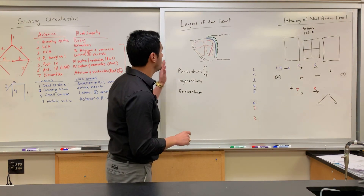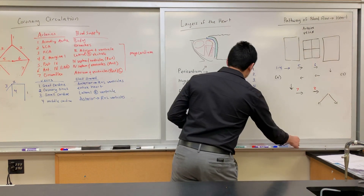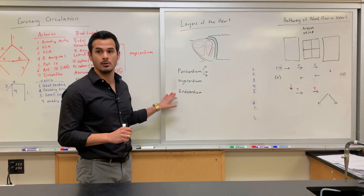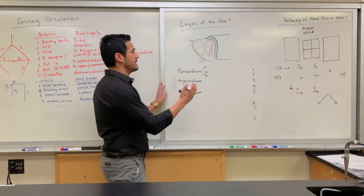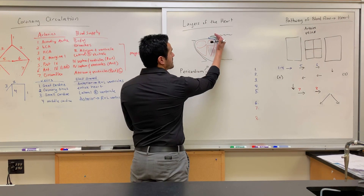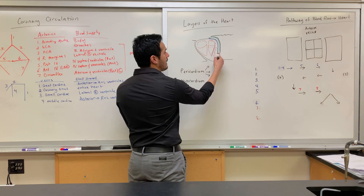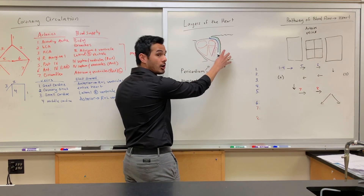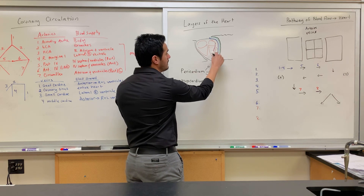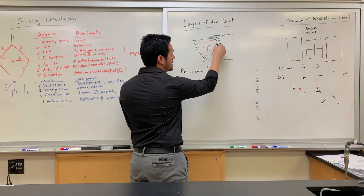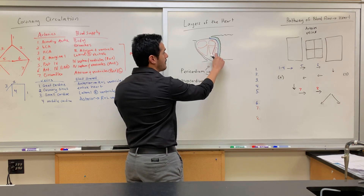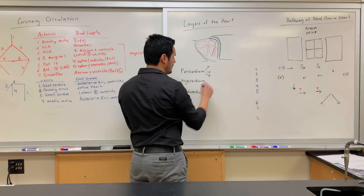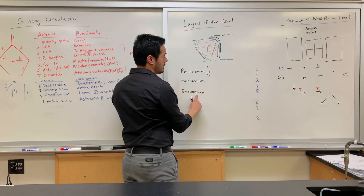For the layers, there are three main layers: the pericardium, the myocardium, and the endocardium. The pericardium is on the outside, the myocardium is the muscle of the heart in the middle, and the endocardium is the innermost layer.